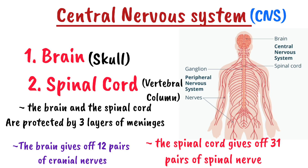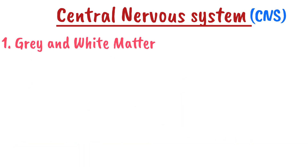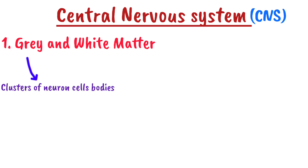The function of the CNS is to serve as the supreme command center of the body, responsible for processing and generating neural impulses. Moving to the main components of the CNS: number one is the gray and white matter. The neurons, which are the main cells of the CNS, have a gray-colored cell body and myelinated axons that appear white, dividing the CNS into gray and white matter.